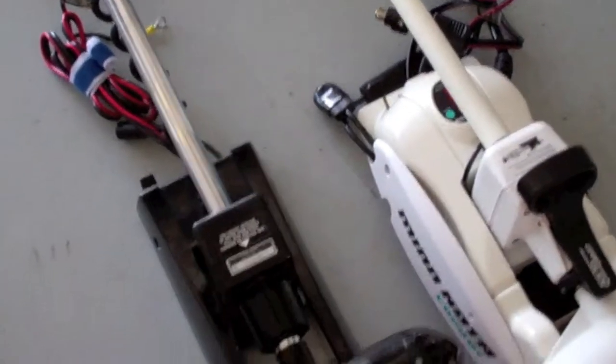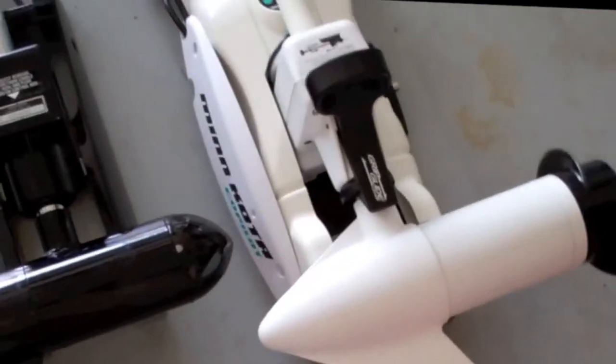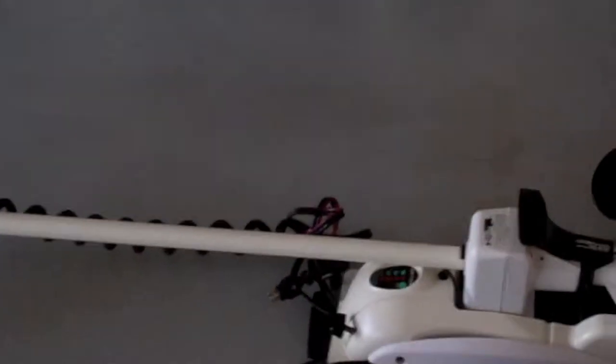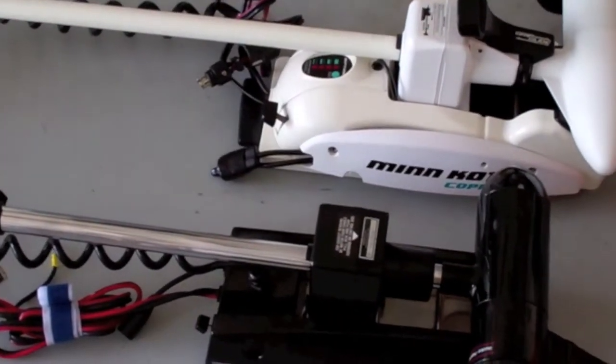Alright, so these three trolling motors, which is kind of an overkill. The white one here is a Riptide, and that goes to that big boat there, but it's going to have the same plug as what I'm using for the freshwater bass boat.